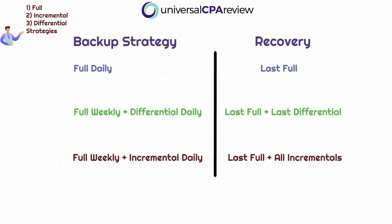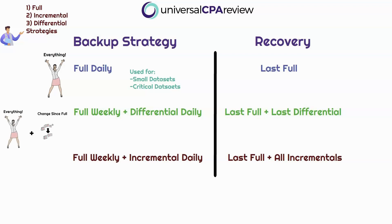So what are the strategies? Based on your storage space, your need for fast recovery, and all these considerations, you pick one of these strategies. Backup strategy number one is full daily — at the end of every day you do a full backup. This is often the case if you have a small data set or critical data. Recovery is simple: just go back to the last full backup. Strategy number two is full weekly — every Sunday, for example — and then a differential daily. For recovery, you just look at your last full backup and then add on the last differential.